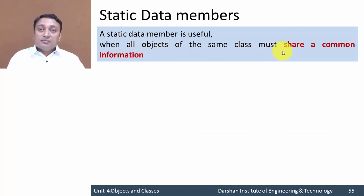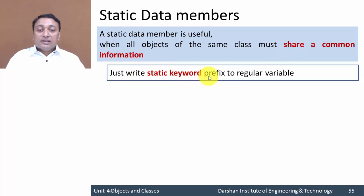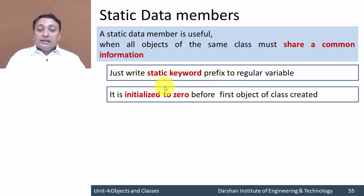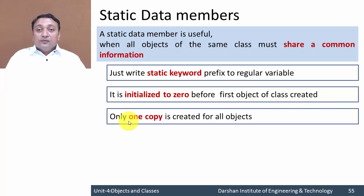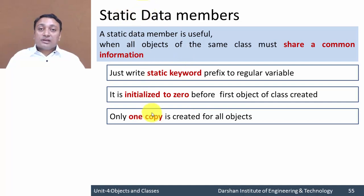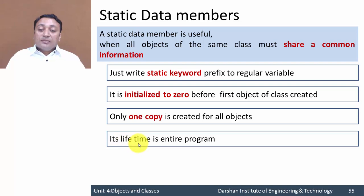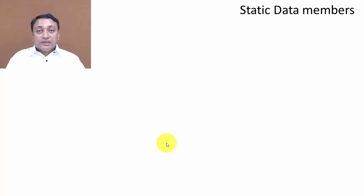Now let us discuss static data members. They are useful when all objects of the same class must share common information. A regular variable can be converted to a static variable just by writing the static keyword as a prefix. It will be initialized to zero before the first object of the class is created. Only one copy is created for all objects, whereas individual memory allocation is done for regular member variables. The lifetime of the static variable is the entire program.